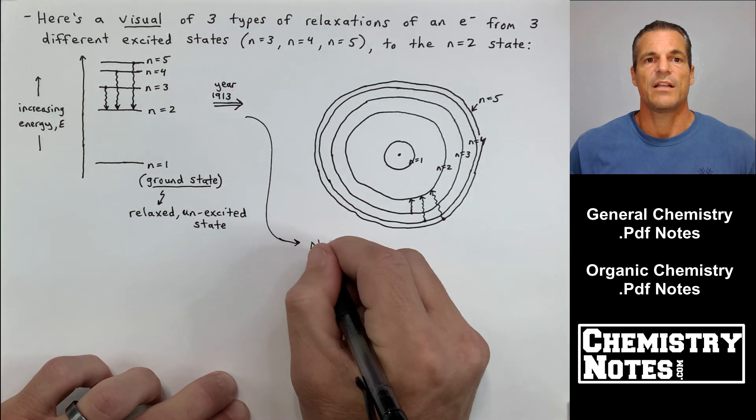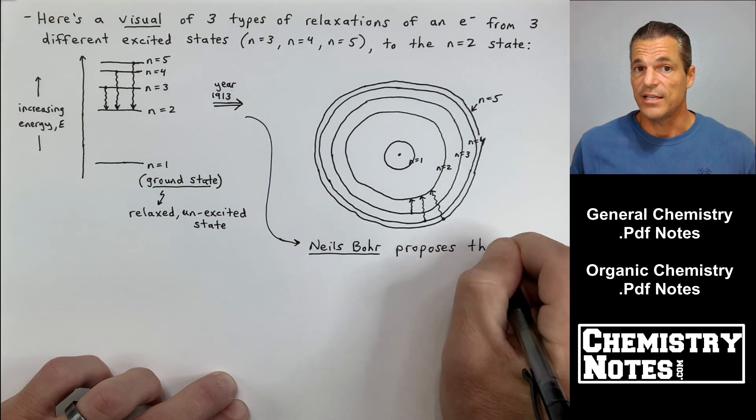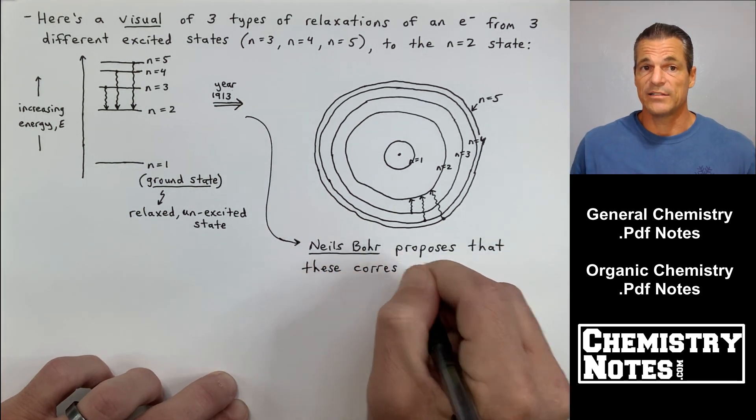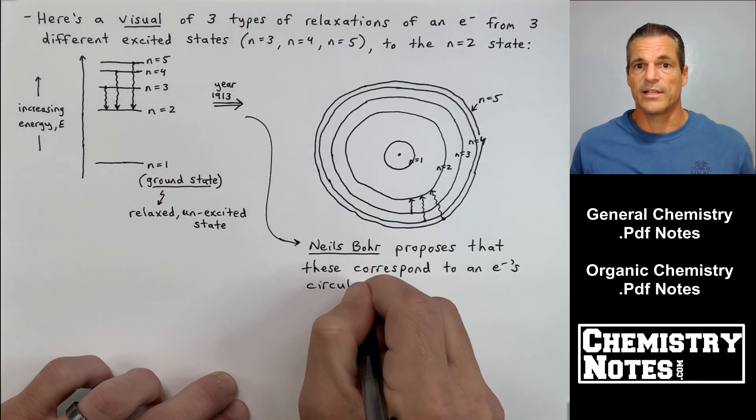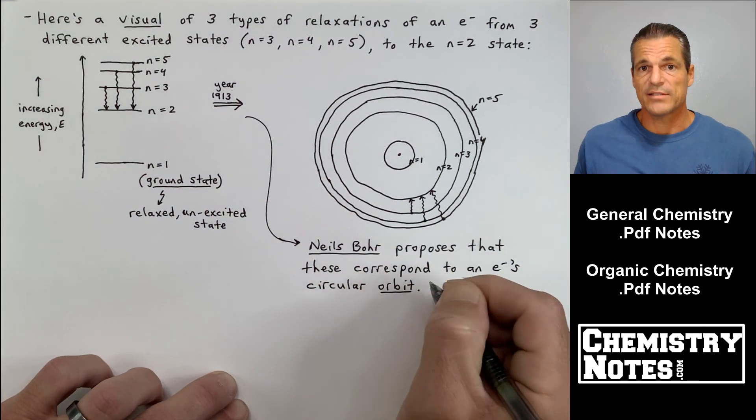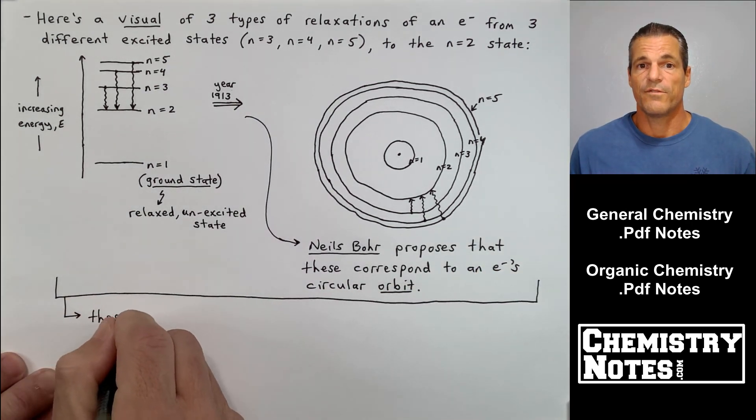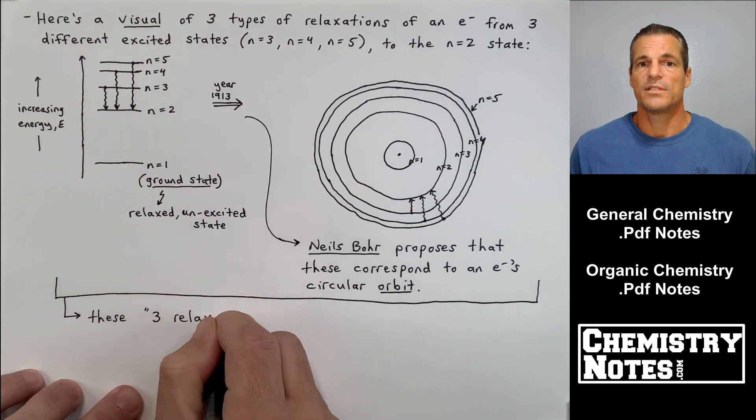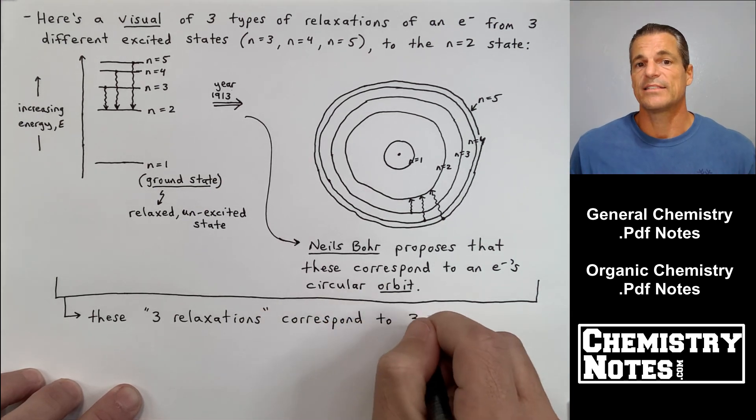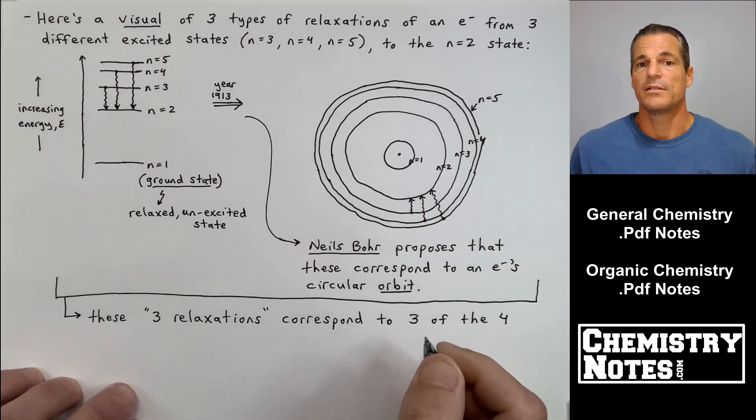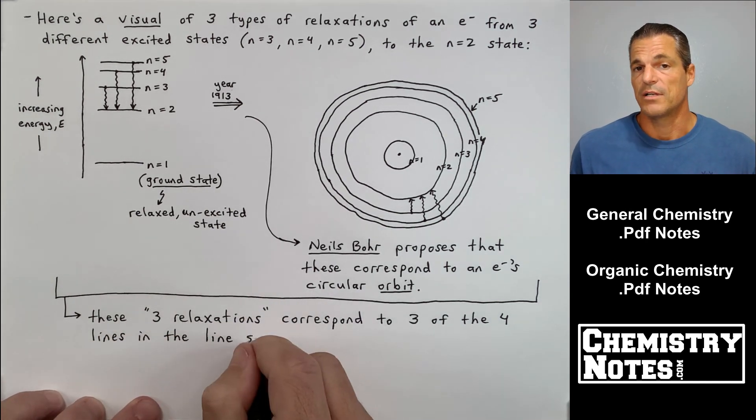The ground state is a relaxed, unexcited state. Now in 1913, Niels Bohr proposes that those little lines I've drawn on the left correspond to concentric circles around the nucleus. I've done the best I can here to draw these concentric circles for n equals 1, 2, 3, and 4. Niels Bohr proposes that these correspond to an electron's circular orbit. So these three relaxations correspond to three of the four lines in the line spectrum for hydrogen.